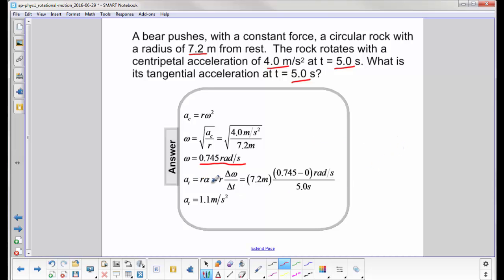Tangential acceleration is r alpha. Alpha is the change in angular velocity over time. We can now put this number in for our final omega. Initial omega is 0 because we were at rest. We come up with a tangential acceleration of 1.1 meters per second squared. And you notice that's when we go back down to two significant figures.